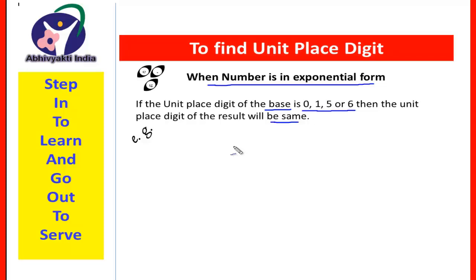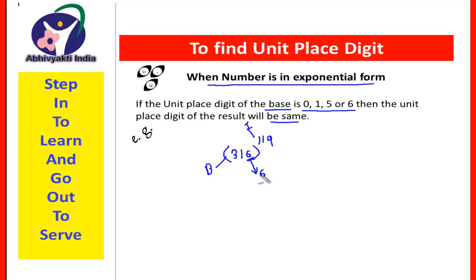Now, take the first example: 316 to the power 190. Here, this is the base and this is the index or exponent, and this is the unit place of the base. The unit place of the base is 6, and since the unit place of the base is 6, the unit place of the result will also be 6.